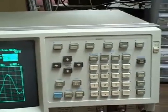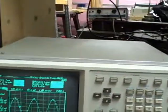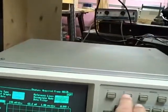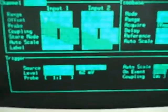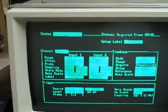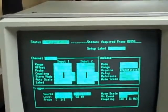You have two inputs plus a separate trigger input, and you have the setup screen which allows you to tell it what kind of probe you're using, how much voltage offset you have, what range you're on, and so on.